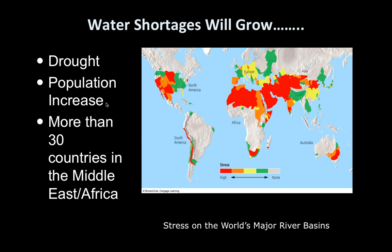Water shortages are going to grow and become a problem even for people who aren't affected right now, because of things like droughts — we are having more droughts and they're lasting longer. The population is increasing and will eventually reach 11 billion people by the end of this century, putting a strain on water resources. We already have 30 countries in the Middle East and Africa having enormous problems not just feeding their people but getting them fresh drinking water.